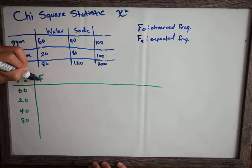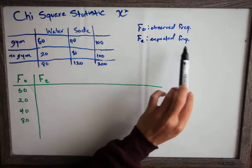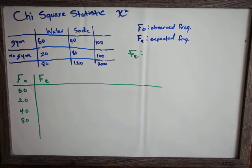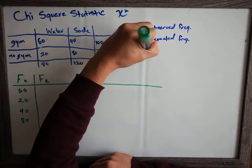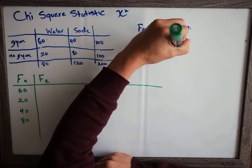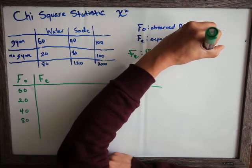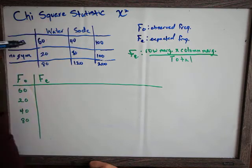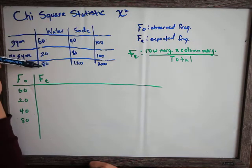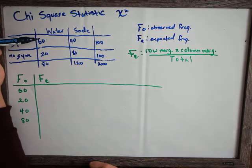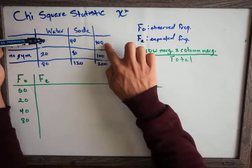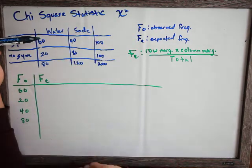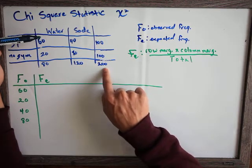The next column is called F-E, which stands for expected frequency. To find expected frequency, we use a formula: row marginal times column marginal divided by the total. For gym and water, the row marginal is 100 and the column marginal is 80, so we do 100 times 80, which is 8,000, divided by 200, which equals 40.